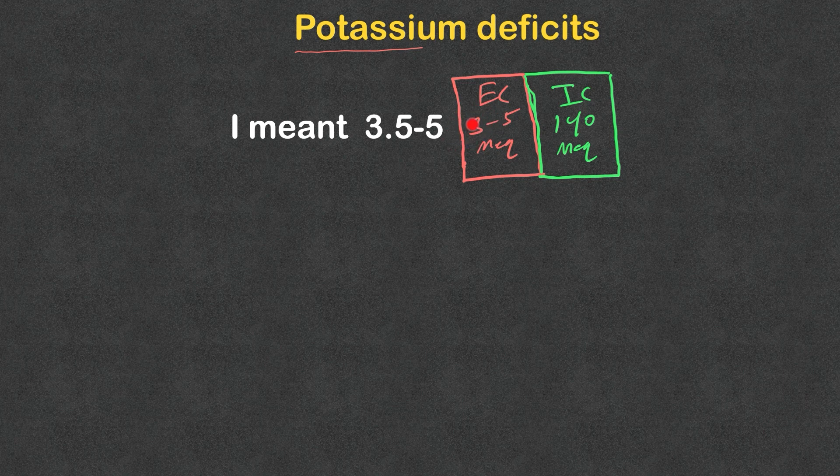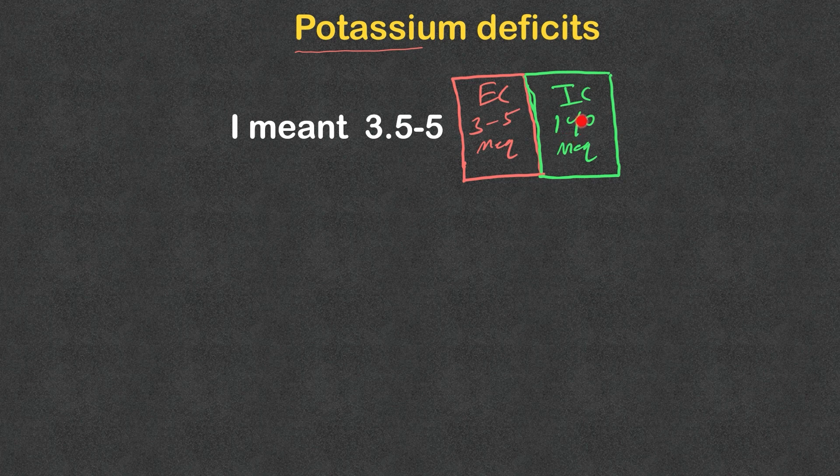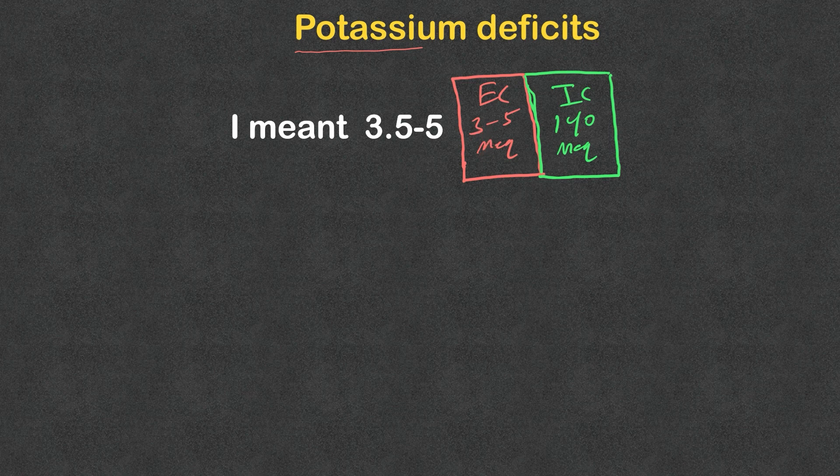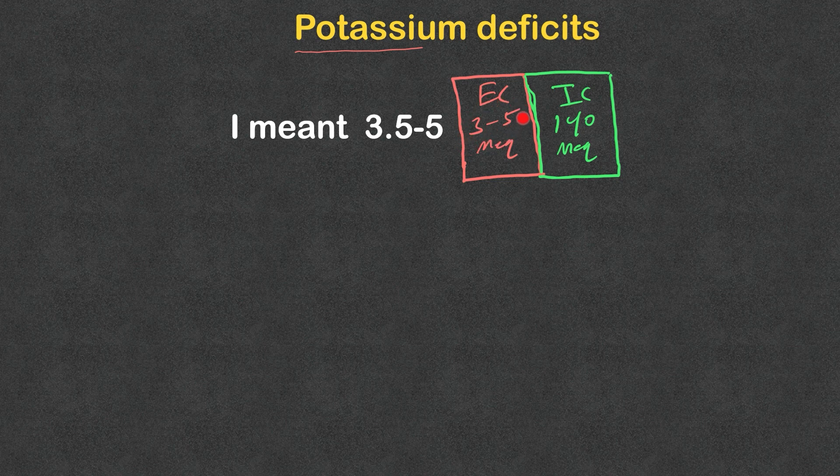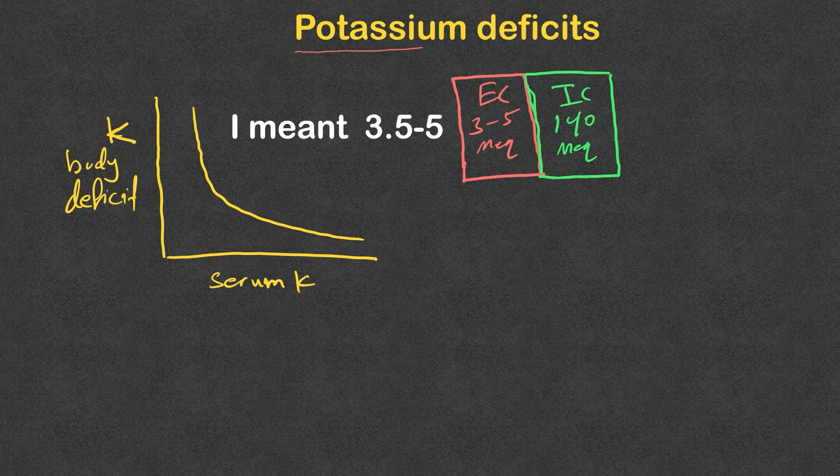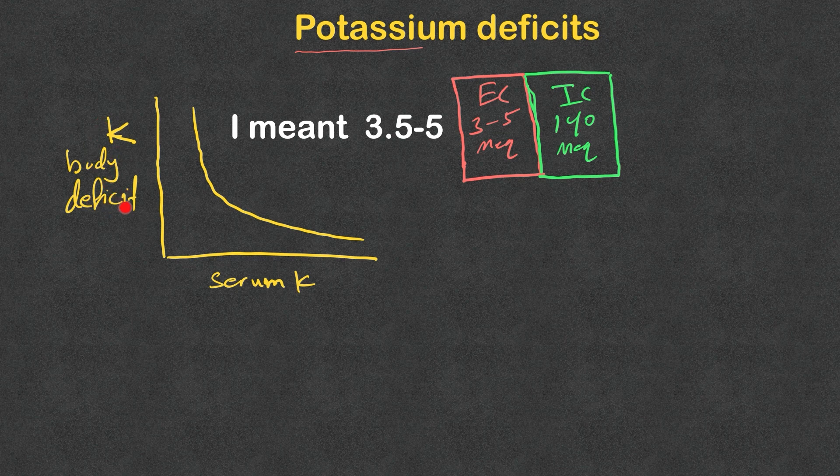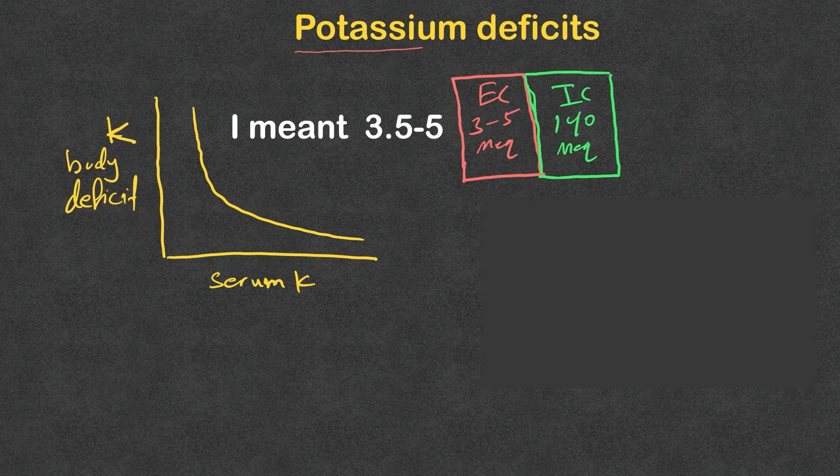When we see a drop of potassium level here, even a small drop, that probably means a large deficit that happens here that now reflects as a small drop in the extracellular fluid. What also this means is that the relation between the extracellular fluid potassium concentration and the potassium deficits is exponential. As you see in this graph here, a small drop in the potassium will mean large body deficits of potassium.